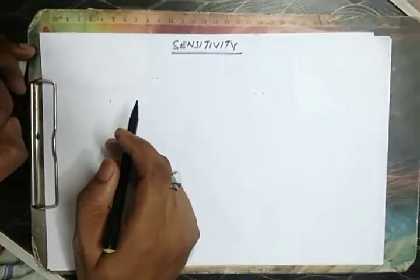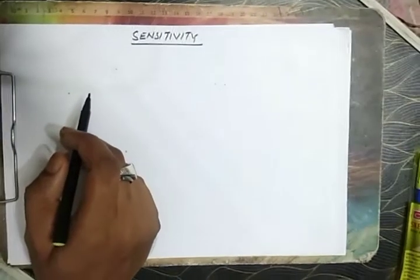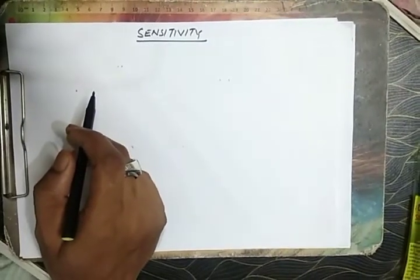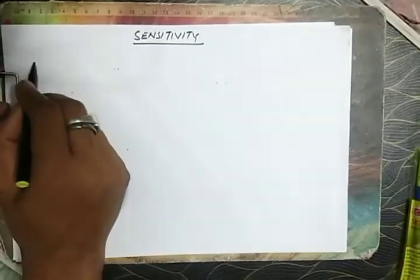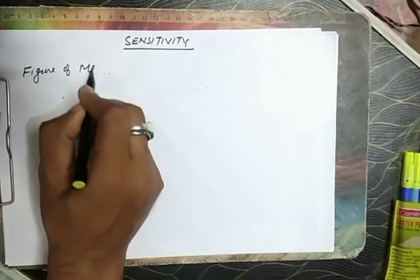A galvanometer is said to be more sensitive if it gives large deflection for small amount of current. Now, there is a term called as figure of merit.